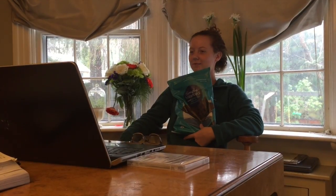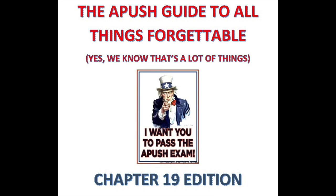Overall, the growth of discontent can be summed up as a period of time where people were poor, hungry, and angry at the government. And that concludes the APUSH Guide to All Things Forgettable, Chapter 19 Edition. I hope now you remember. And if not, you might want to switch out.